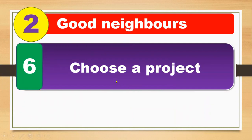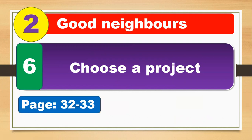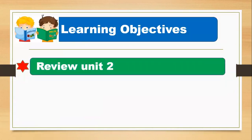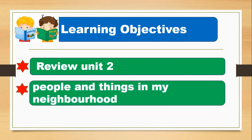Choose a project, page 32 and 33. Basically, you are going to review unit number two — what did you learn from unit two. In this unit, you are going to review and talk about people and things in your neighborhood.